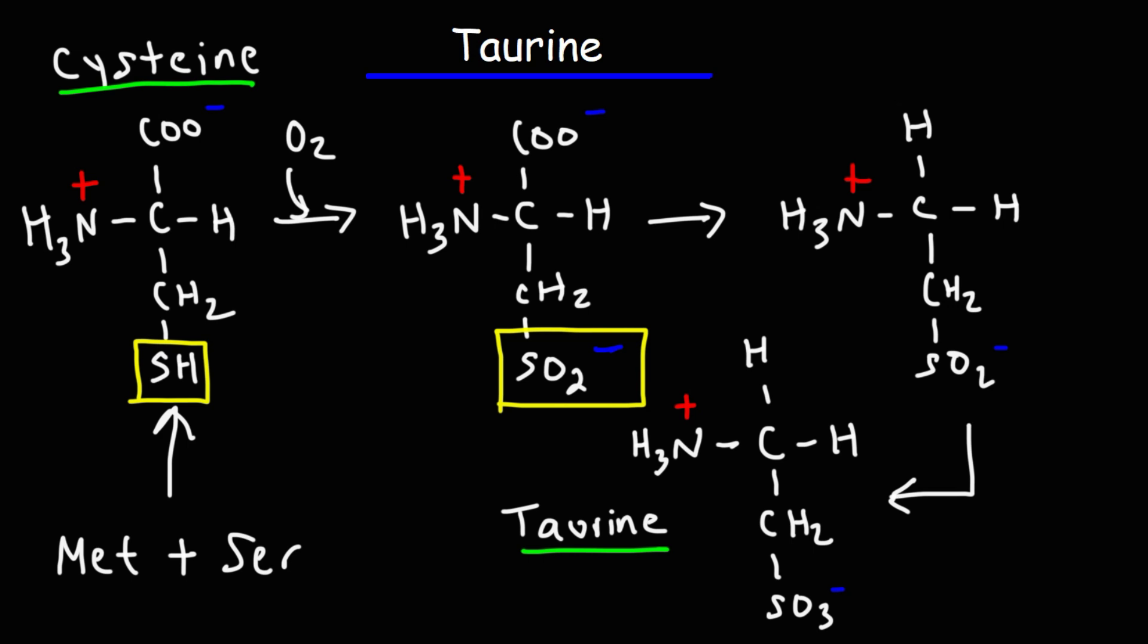Now the next step is decarboxylation, the removal of carbon dioxide. So the carboxyl group is going to be converted to a hydrogen, and this is going to create a molecule known as hypotaurine.